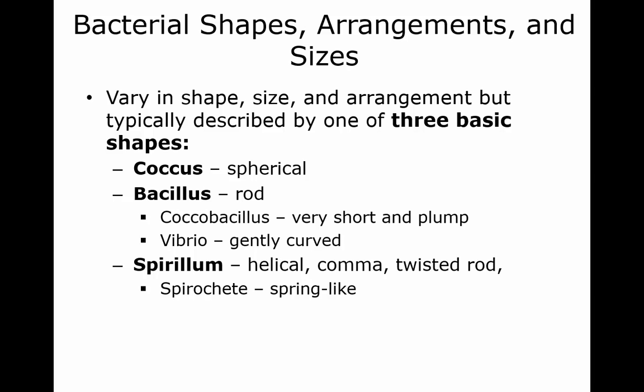Now looking at the shapes, arrangements, and sizes of bacterial cells. There are three basic shapes: if they're spherical, they're coccus; if they're rod-shaped, they're bacillus. Sometimes the rod is short and fat — that's coccobacillus, a combination of coccus and bacillus. It's vibrio if it's curved a little bit — a curved rod. The spirillum can be helical shaped, like a comma or a twisted rod. And it's called a spirochete if it's twisted so much that it looks like a spring.